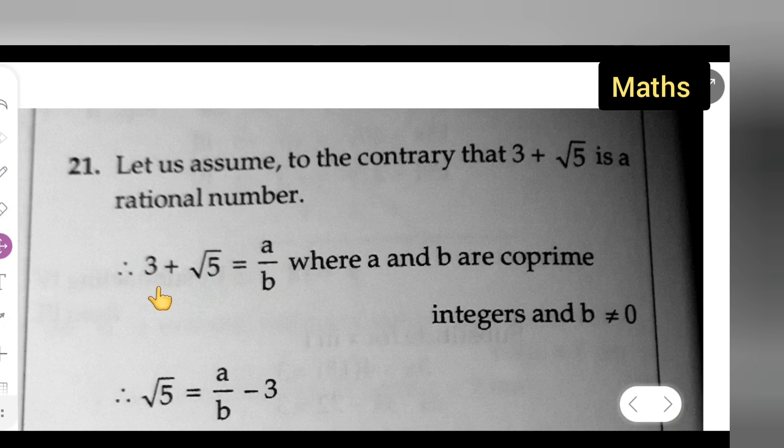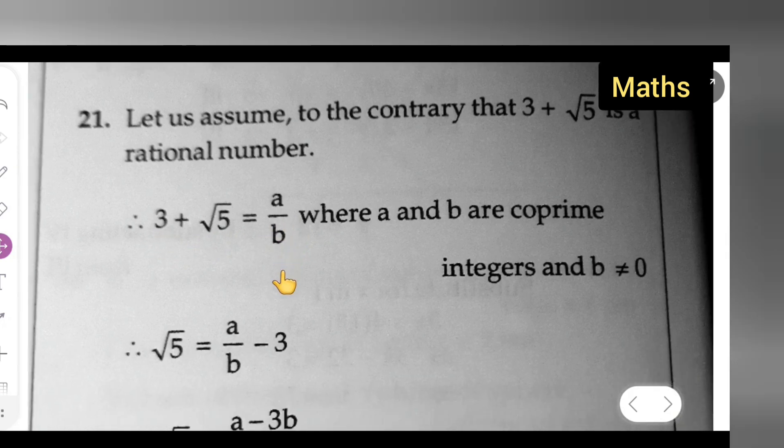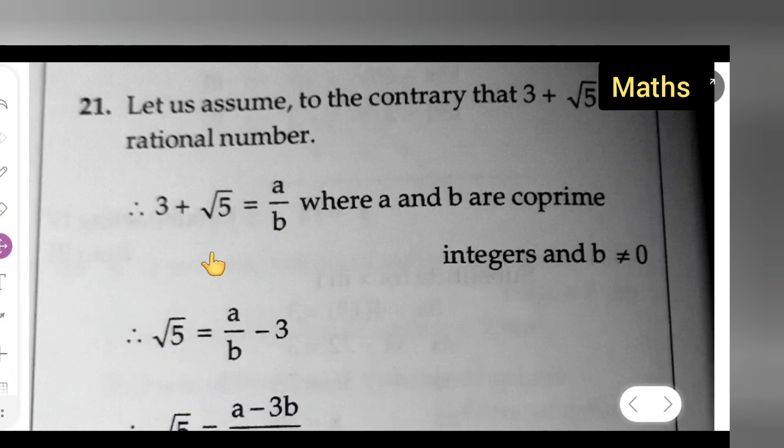Now take this 3 to the other side. It will become positive 3 will turn into minus 3. So root 5 equals a upon b minus 3.